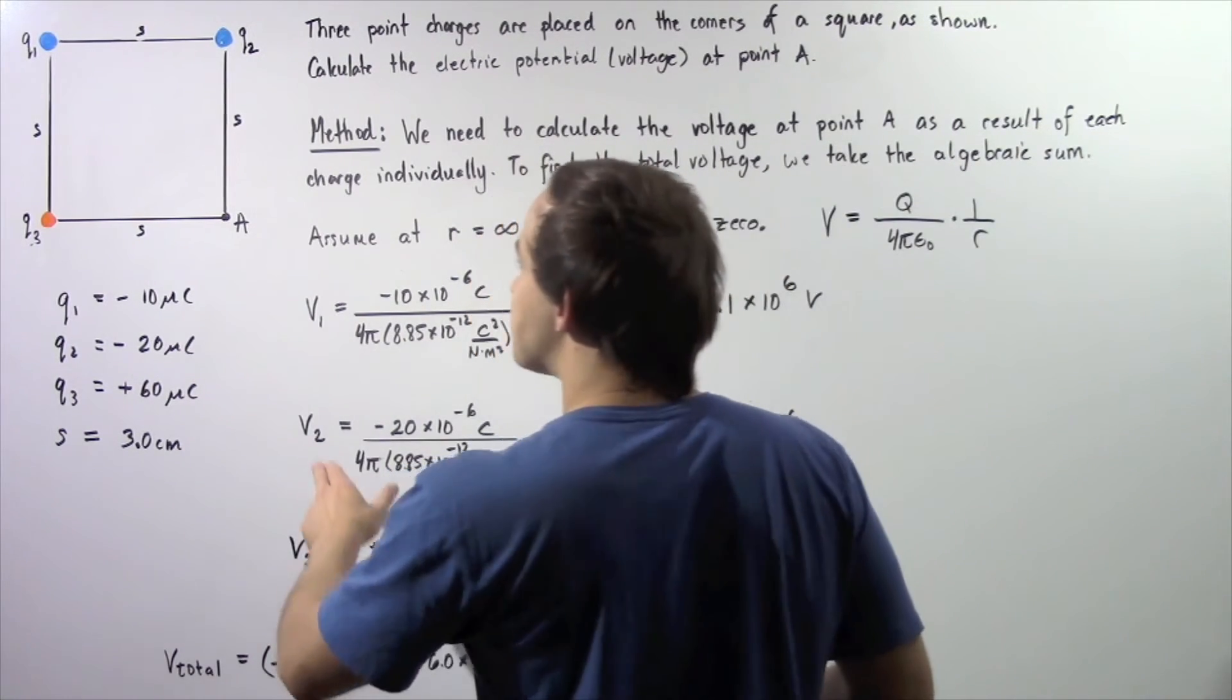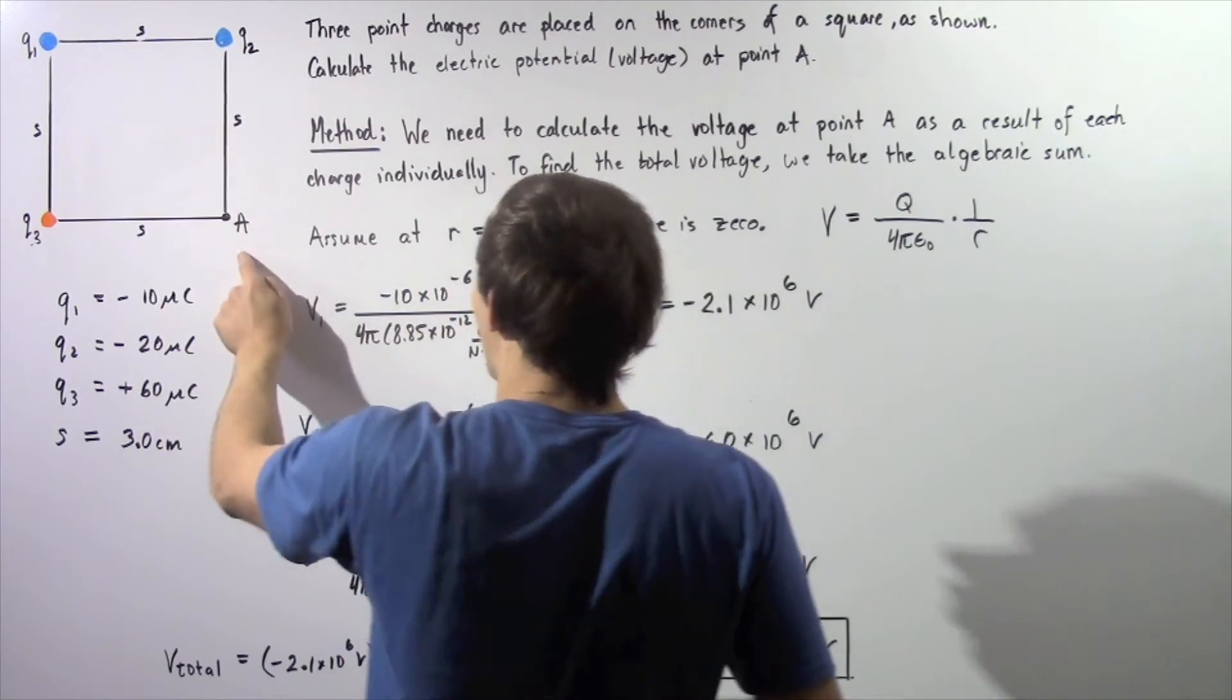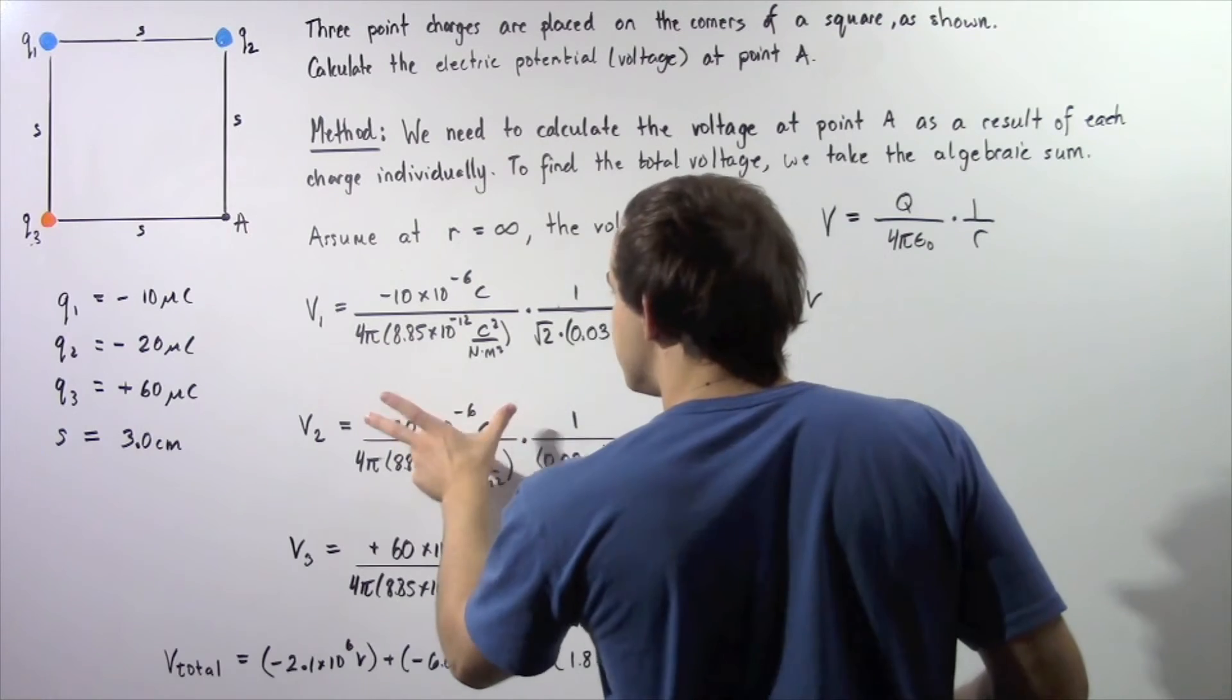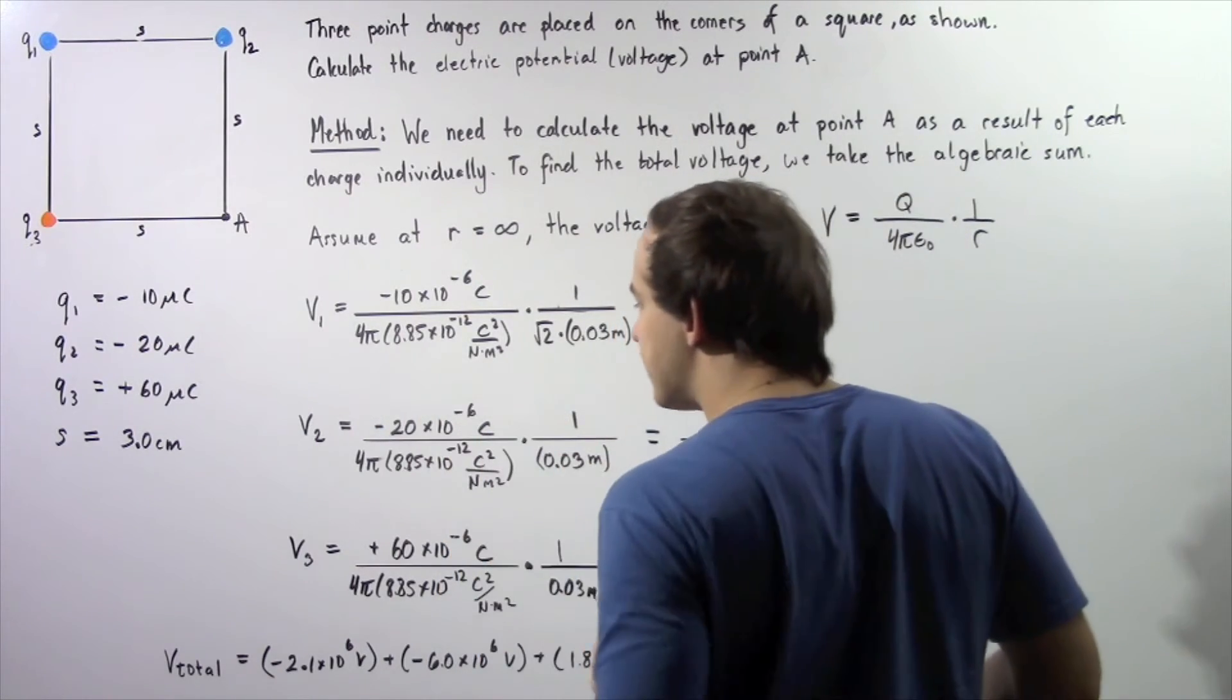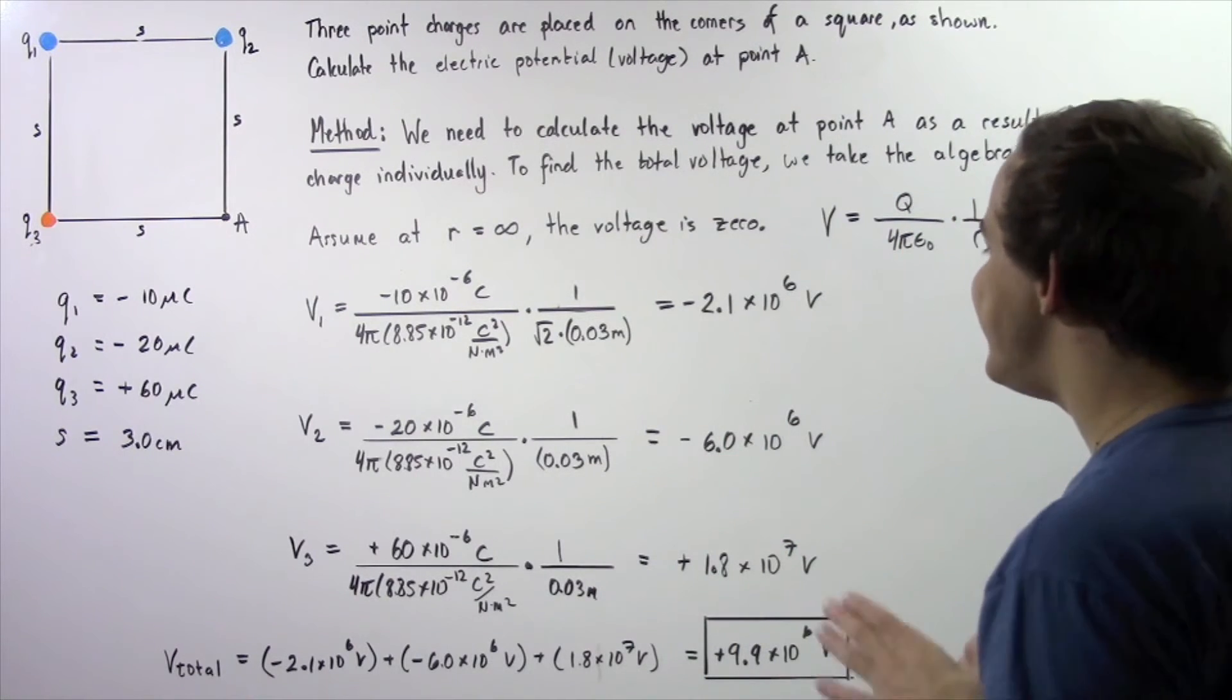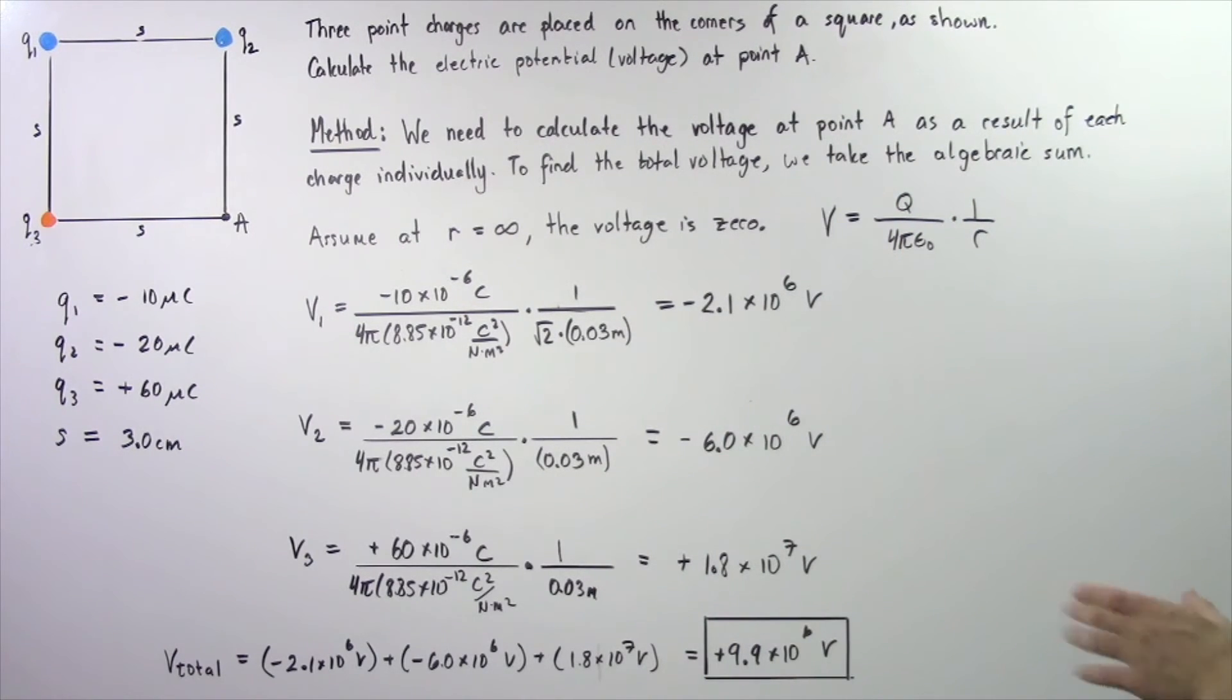We can find the voltage as a result of Q2 at point A in the same exact manner. We plug in our quantity of charge, which is negative. We plug in our distance, which is 0.03 meters, and we get negative 6 times 10 to the 6 volts.